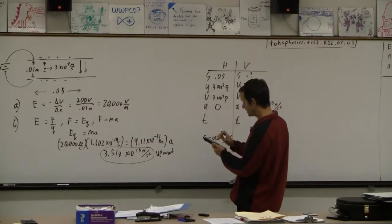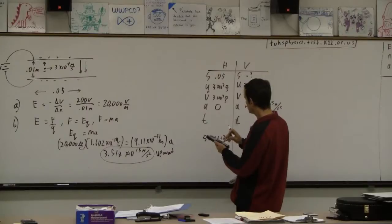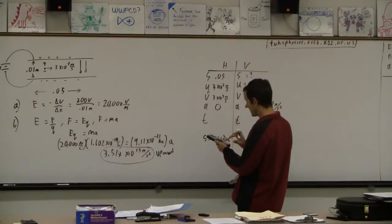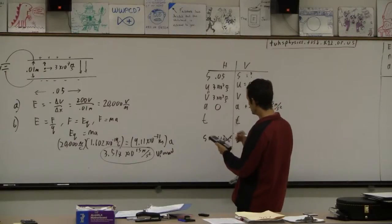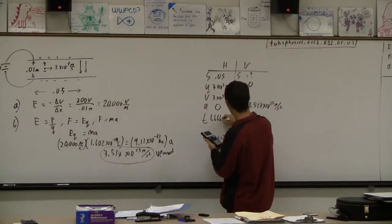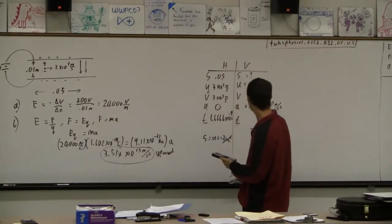So 0.05 divided by the answer that I've got on my calculator, which is this number. Whoops, no it's not. Divided by 3 times 10 to the 7th. Okay, there we go, now we're in good shape. I'm going to store that in alpha T. And this is 1.66666 times 10 to the minus 9th seconds.